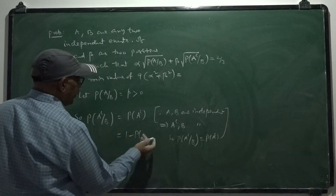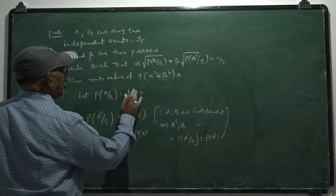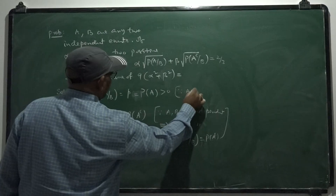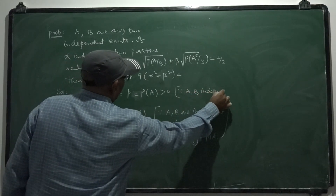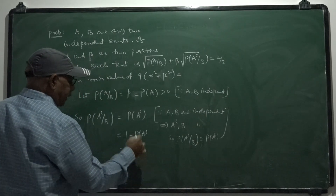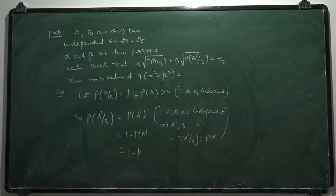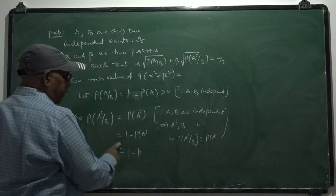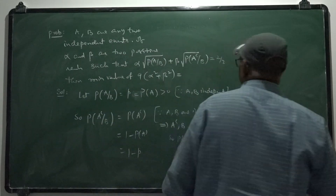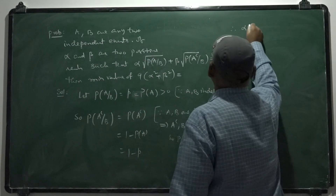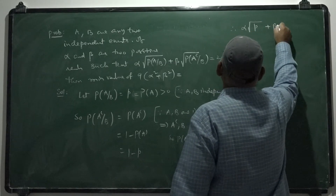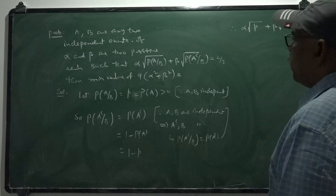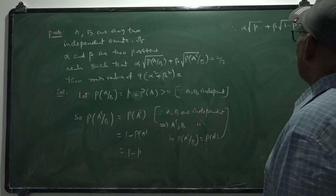Therefore, the equation becomes: alpha times root p plus beta times root of 1 minus p equals 2 by 3. To minimize this function in p, differentiate with respect to p and set equal to zero: alpha by 2 root p minus beta by 2 root 1 minus p equals 0.